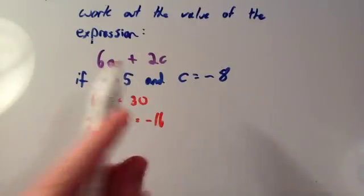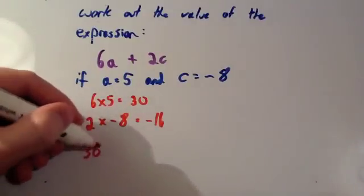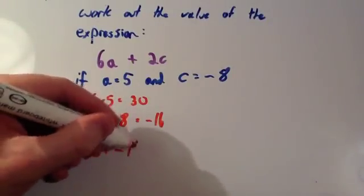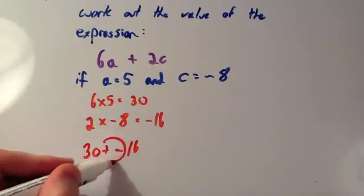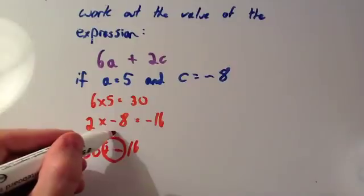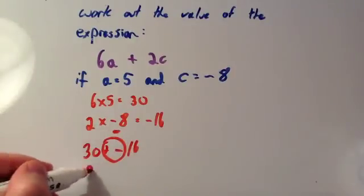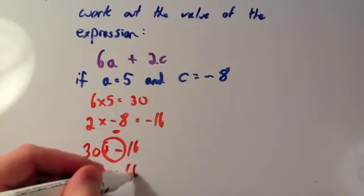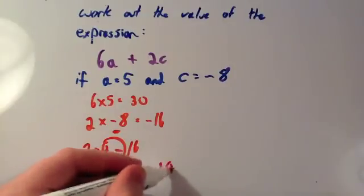So we're going to do 30 plus negative 16. Now, remember, if you've got a plus and a minus sign right beside each other, you replace it with a single subtract. So this is going to be 30 subtract 16. 30 subtract 16 is 14.